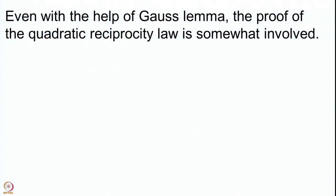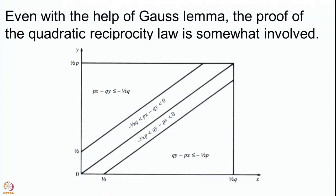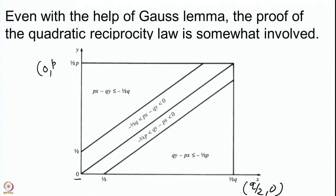The trick is to look at a particular rectangle in ℝ² and examine lattice points in this rectangle. The rectangle has 4 endpoints: (0,0), (q/2, 0), (0, p/2), and (q/2, p/2). We denote this rectangle R. We decompose it into 4 parts R1, R2, R3, R4 going from top to bottom, not taking the slanted diagonal lines.